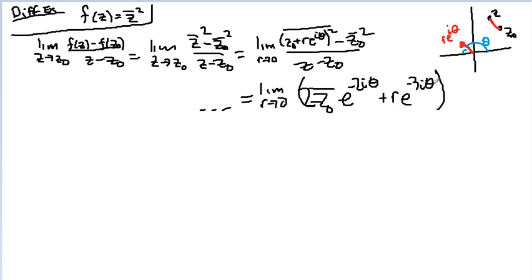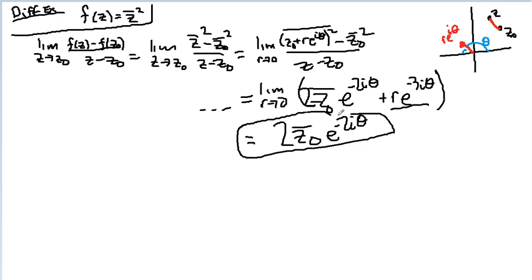And as r goes to zero, it doesn't matter what theta does. This whole thing is going to go to zero. So I just end up with two z naught e to the negative two i theta. Regardless, there's no r in here. So this is what the limit is.